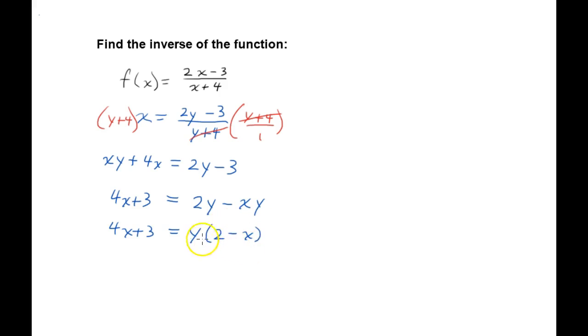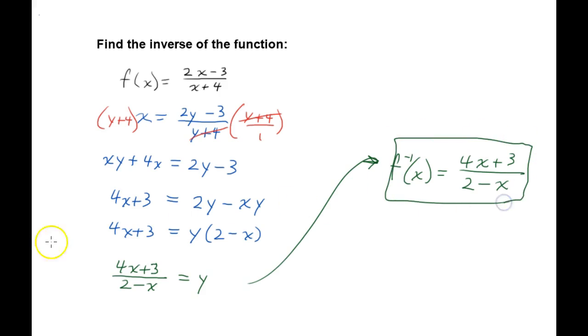Now all we have to do is divide each side by the 2 minus x. If I divide it by 2 minus x on this side, this will cancel out. And then I'll have it in the denominator on this side. So I'll write that final answer, 4x plus 3 all over 2 minus x, that equals y. So we can write that the inverse of the function equals 4x plus 3 over 2 minus x. I hope that helps.